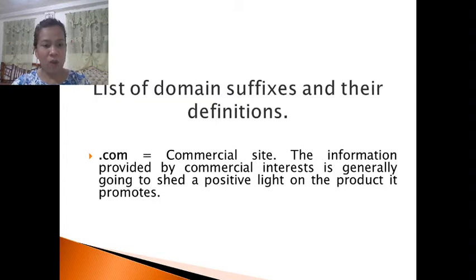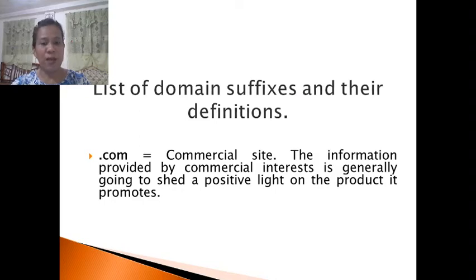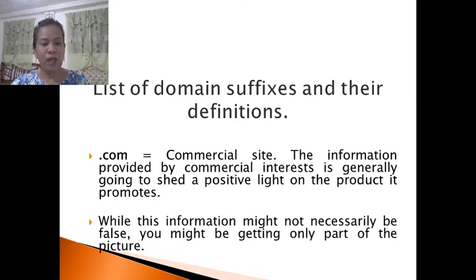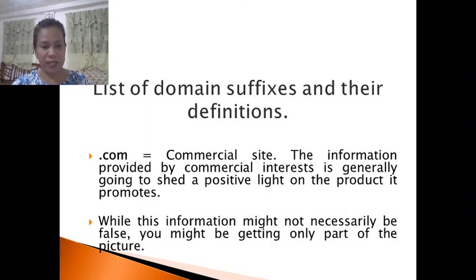For example, .com is a commercial site. The information provided by commercial interests is generally going to shed positive light on the product it promotes — very common. While this information might not necessarily be false, you might be getting only part of the picture.